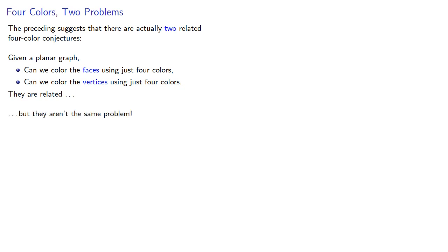The preceding suggests that there are actually two related 4-color conjectures. Given a planar graph, can we color the faces using just 4 colors, or can we color the vertices using just 4 colors? They're related, but they aren't the same problem. Or are they? Okay, let's take a closer look.